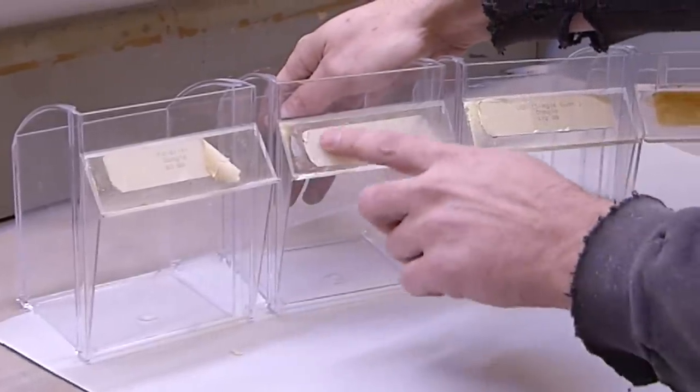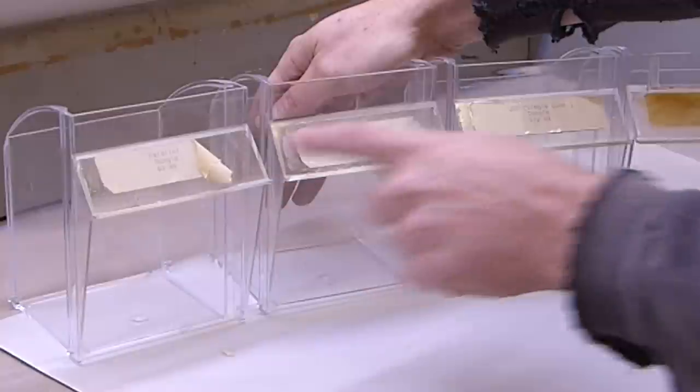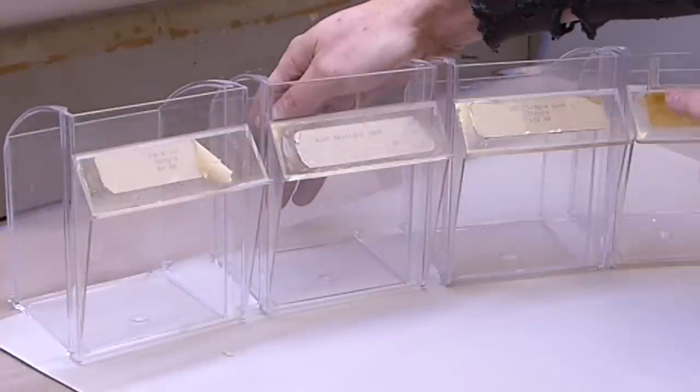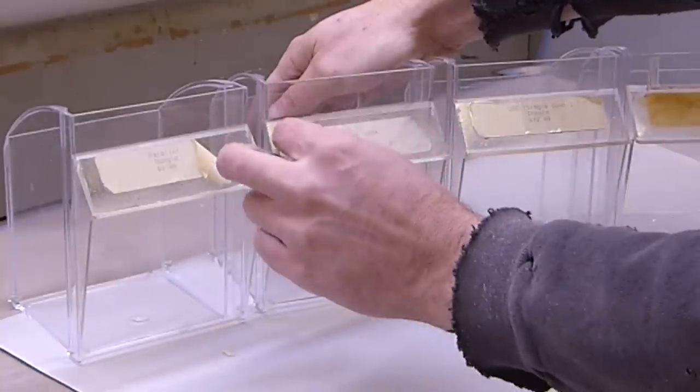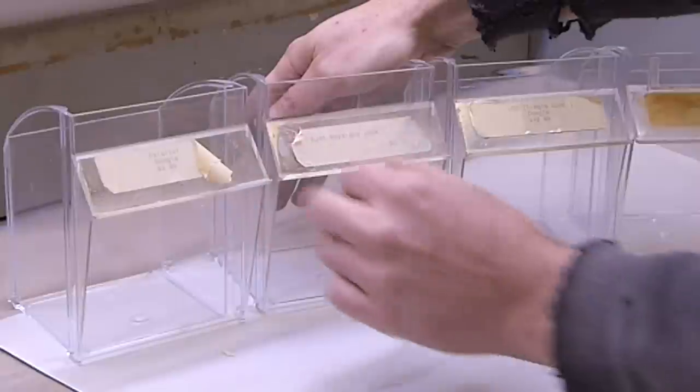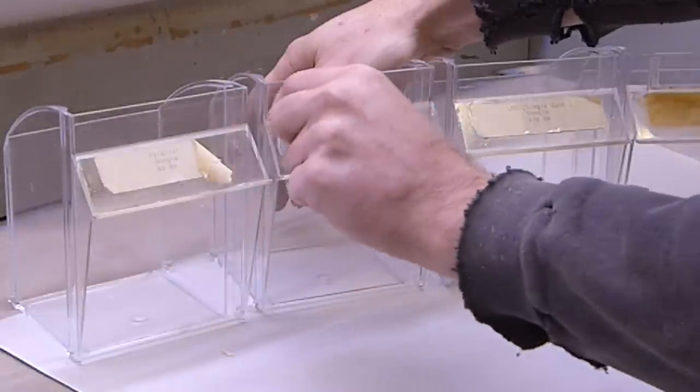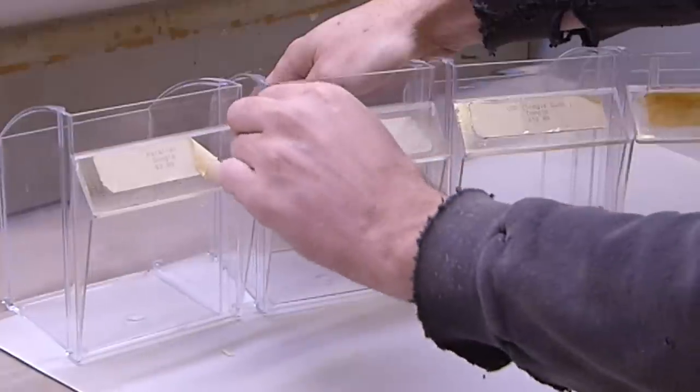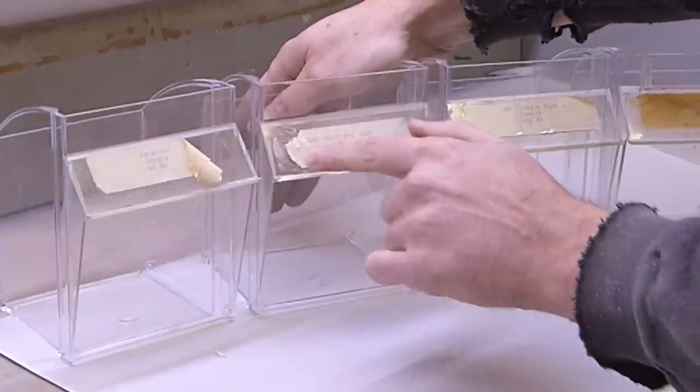Next, petroleum jelly. I basically rubbed it all over. Now, I let all of these sit overnight. The petroleum jelly didn't seem to really do anything for the adhesive. The labels are tearing apart.